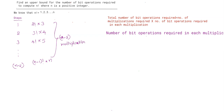To find the number of bit operations required in each multiplication, we observe that in step 1 we multiply 2 factorial and 3; in step 2 we multiply 3 factorial and 4; in step 3 the multiplication involves 4 factorial and 5. As we proceed further, the numbers involved in the multiplication become larger and larger. So the number of bit operations required in each multiplication is less than or equal to the number of bit operations required in the last step.